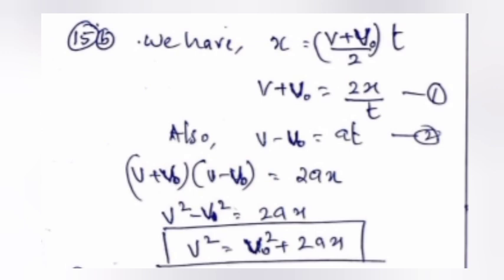Part B: We have x equals (v plus v₀)/2 into t. v plus v₀ equals 2x by t. Also v minus v₀ equals at. (v plus v₀) into (v minus v₀) equals 2ax. v² minus v₀² equals 2ax. v² equals v₀² plus 2ax.